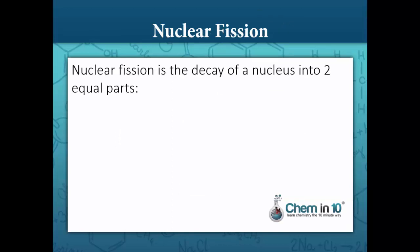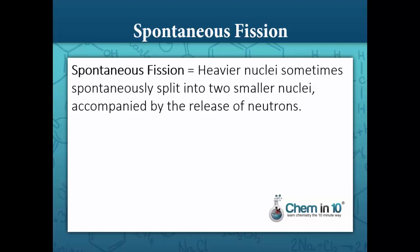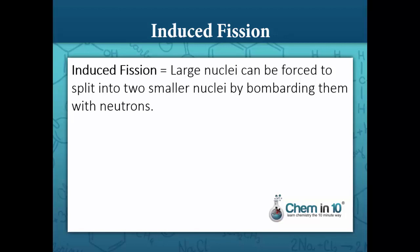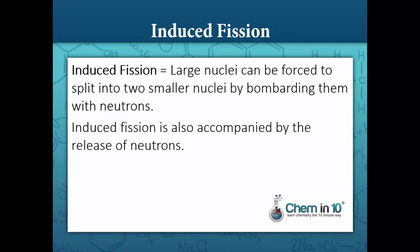Nuclear fission is the opposite process to nuclear fusion. In nuclear fission, nuclei are not fused together but split into two equal parts — this is what is meant when they talk about splitting the atom. There are actually two types of fission: spontaneous and induced. Spontaneous fission describes when heavier nuclei spontaneously split into two smaller nuclei accompanied by the release of neutrons. Induced fission, just like its name suggests, is when large nuclei are forced to split into two smaller nuclei by bombarding them with neutrons. Just as in spontaneous fission, induced fission is also accompanied by the release of neutrons.